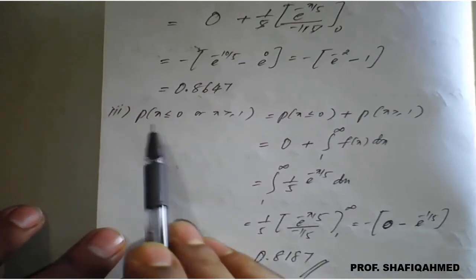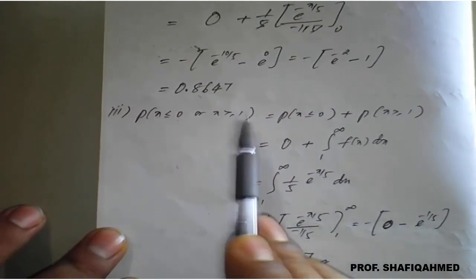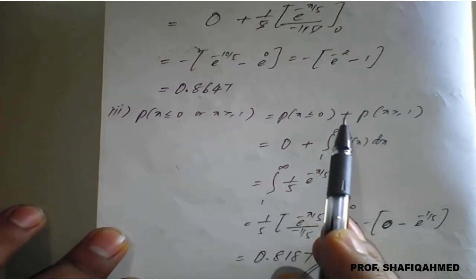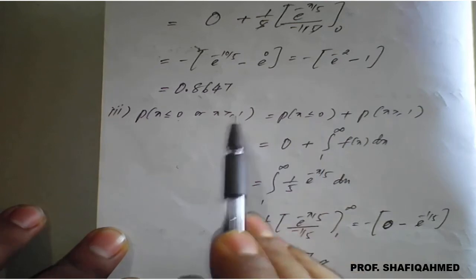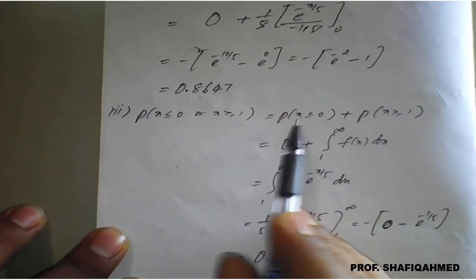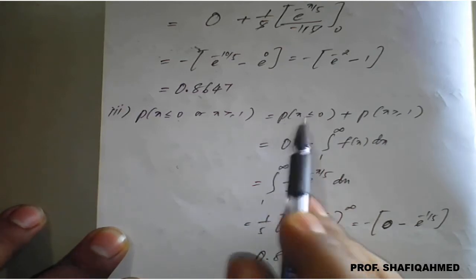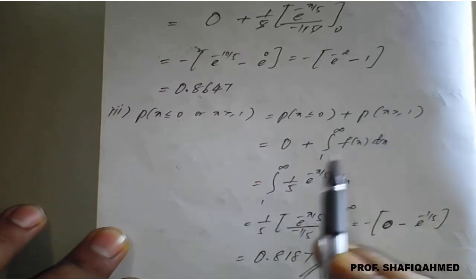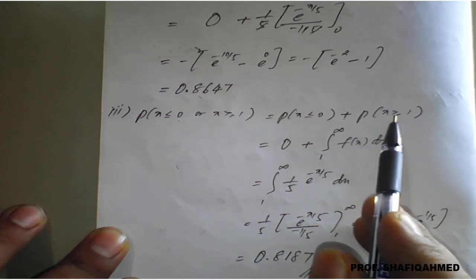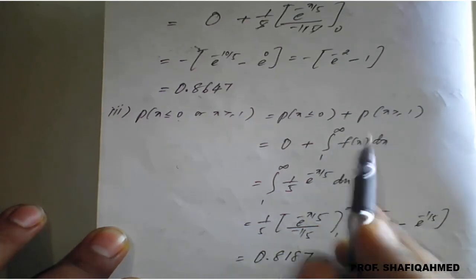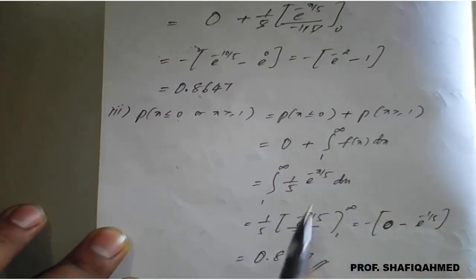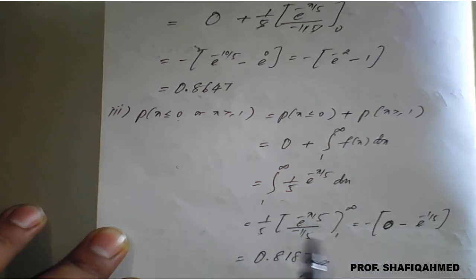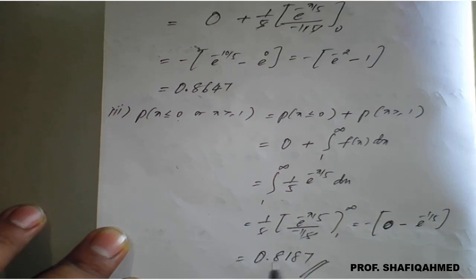For the third part, P(X ≤ 0 or X ≥ 1): because of the 'or', we write it as P(X < 0) + P(X ≥ 1). Since x < 0 gives 0 for the exponential distribution, only positive x is considered. P(X ≥ 1) is integrated from 1 to ∞, or equivalently written as 1 - P(X < 1). Applying upper and lower limits, remembering that e^(-∞) = 0 and the 5s cancel with the minus sign, the result is 0.8185.